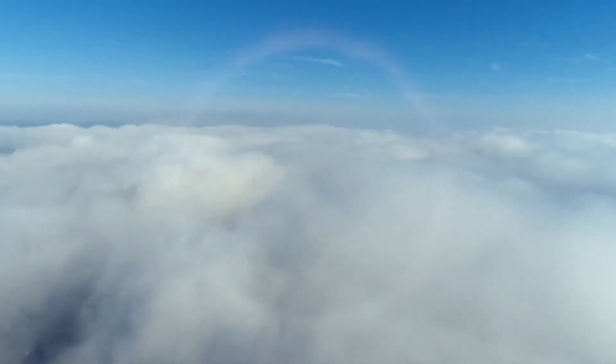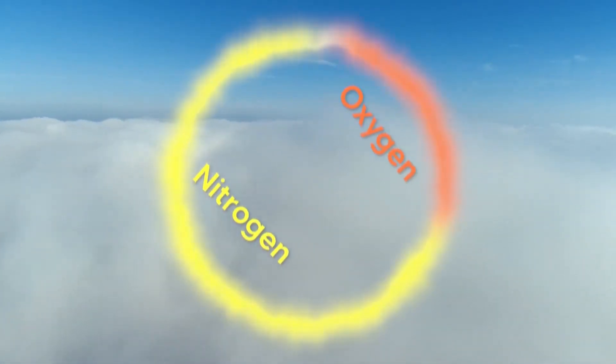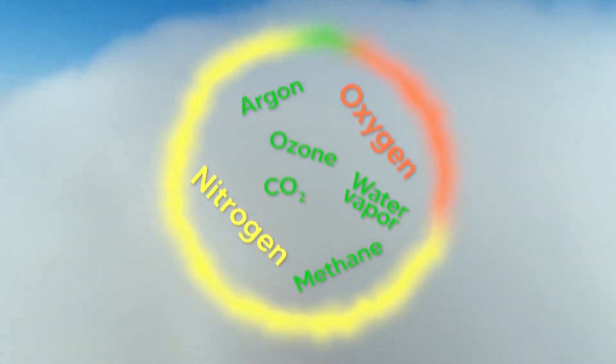Earth's atmosphere is a mix of gases, mainly nitrogen and oxygen. There's also some argon, carbon dioxide, ozone, methane and water vapour.